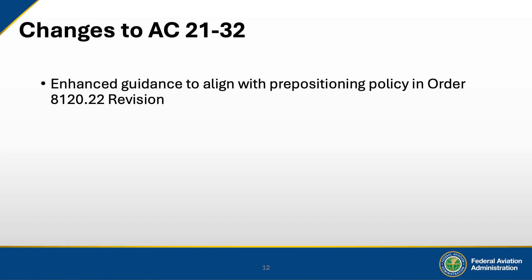Advisory Circular 21-32 was updated to support the revised pre-positioning policy outlined in FAA Order 8120.22. It now provides enhanced guidance aligned directly with updated procedures for handling prototype aircraft engines, propellers, and articles prior to design approval. By strengthening the language and aligning it with FAA Order 8120.22, the FAA has created a more unified and enforceable framework for managing these products, reducing ambiguity and improving compliance across the board. This update reinforces the FAA's broader effort to harmonize policy across orders and advisory circulars.